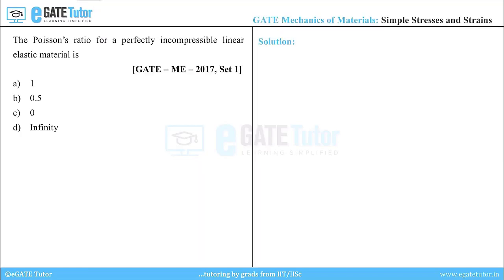This question is from GATE 2017 Set 1, Mechanical Engineering: the Poisson's ratio for a perfectly incompressible linear elastic material is — those are the multiple choices given for this question.